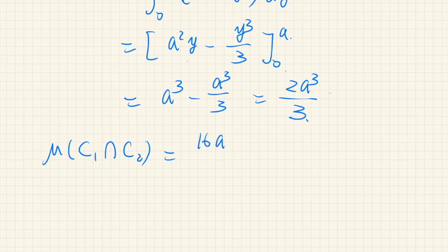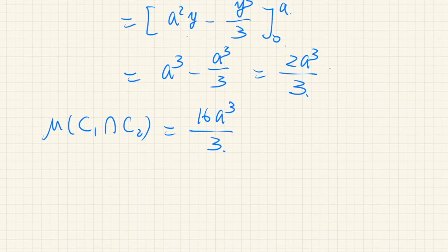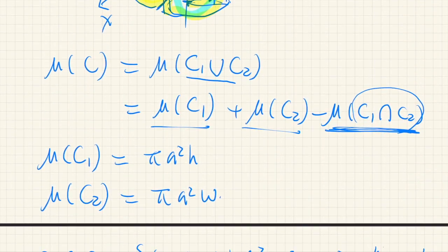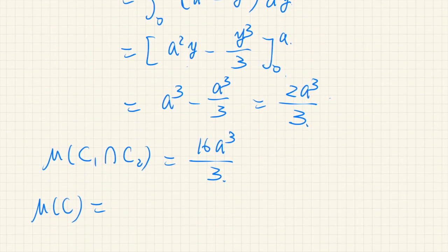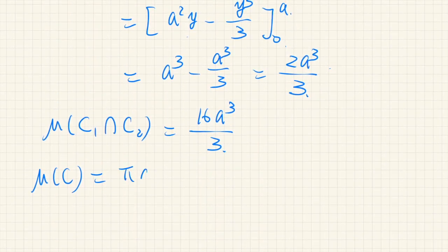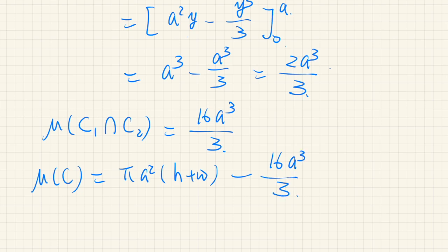So the volume of C = πa²(h + w) − 16a³/3.